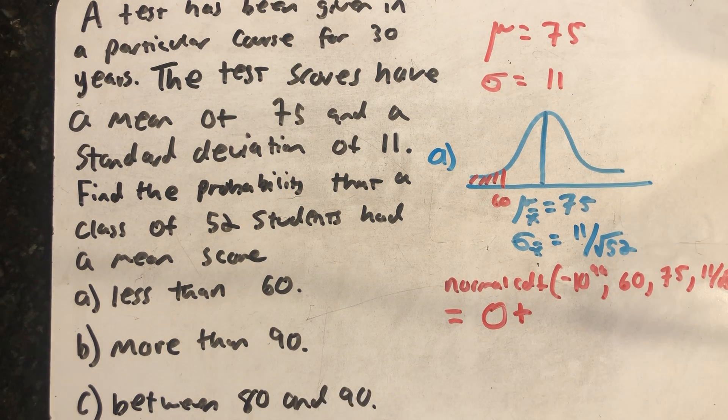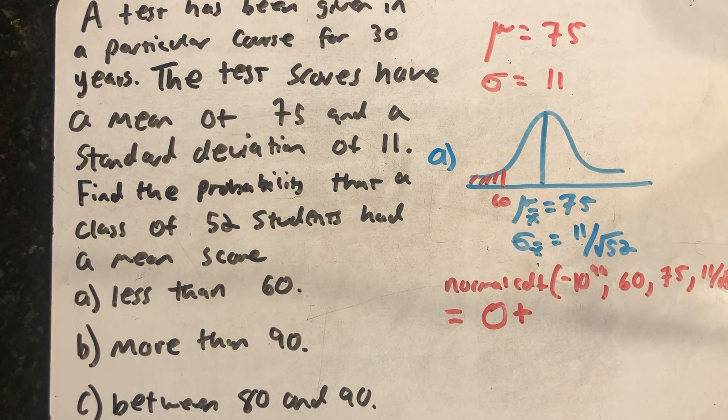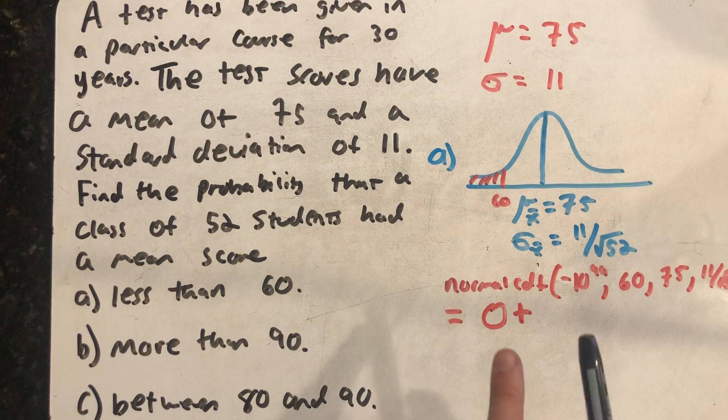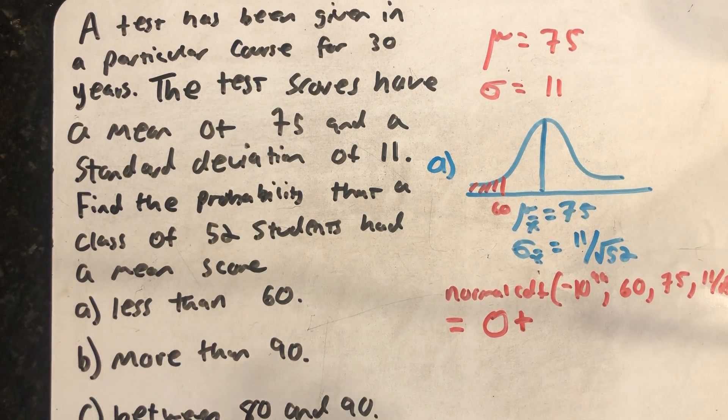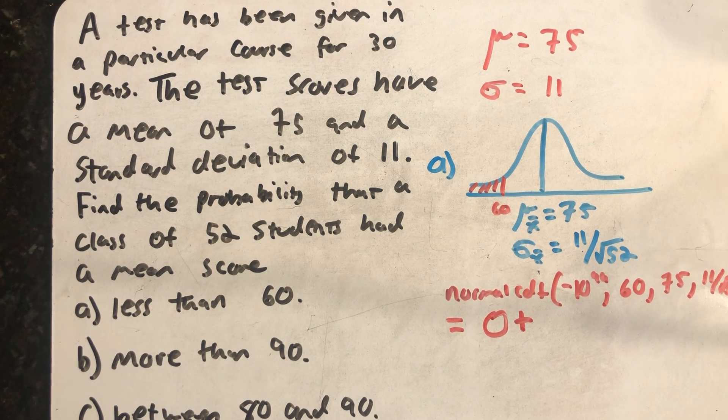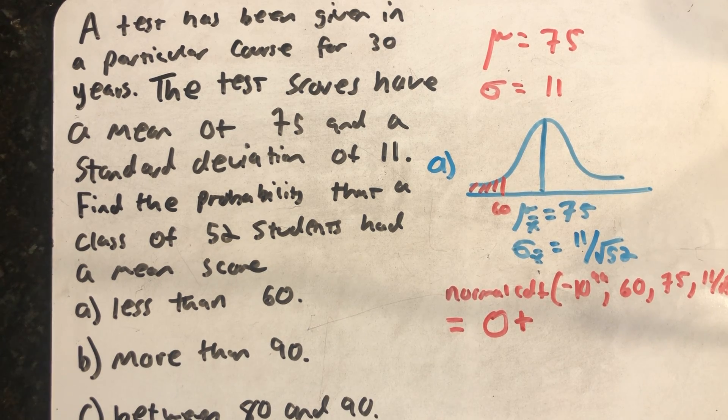I'm going to write a little plus to it because I know it's not actually a zero, because I see some things shaded, but apparently this event is so unusual based on this information that the calculator rounds it to zero. It's almost impossible.